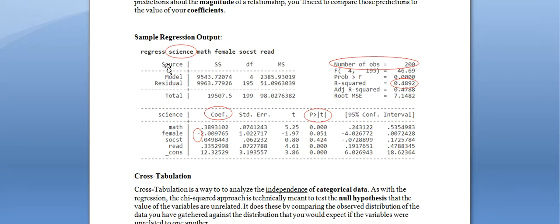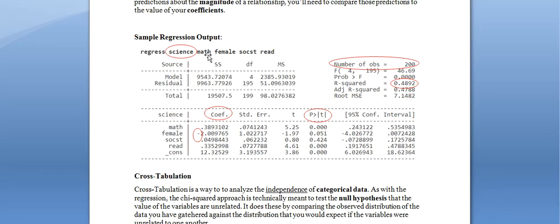All variables included in the regression must be listed at the top of the output. If you were to use statistical software like Stata or SPSS, you would type the command 'regress,' then the name of your dependent variable — in this case, science — then list each explanatory variable. Notice that 'cons' does not appear in that list because constant is not actually a variable; it shows up in any regression for a separate statistical purpose you don't need to pay attention to here.